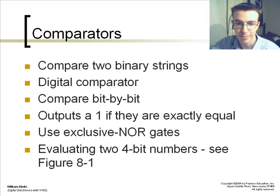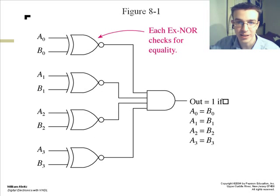It outputs a 1 if they are exactly equal. This type of comparator also uses exclusive NOR gates, evaluating two 4-bit numbers. We'll see this in this figure.